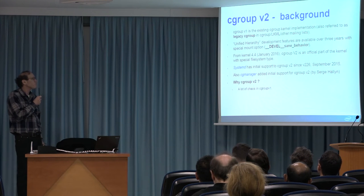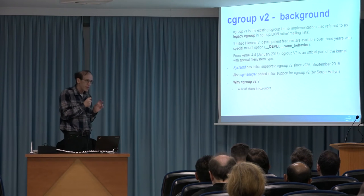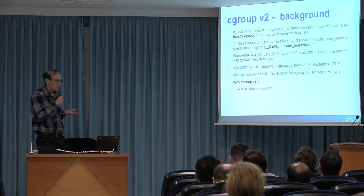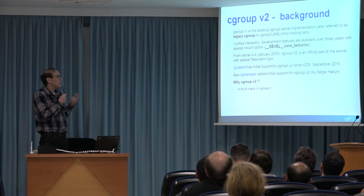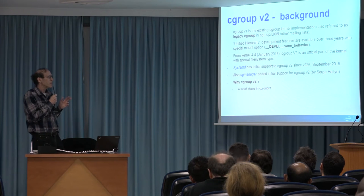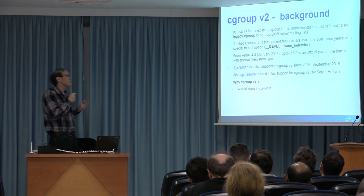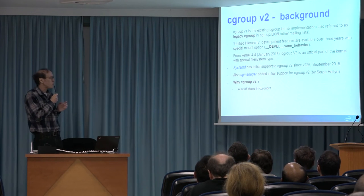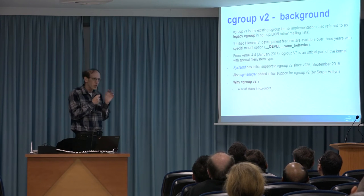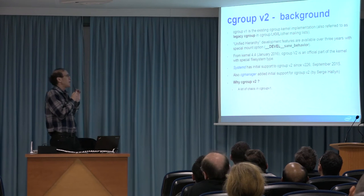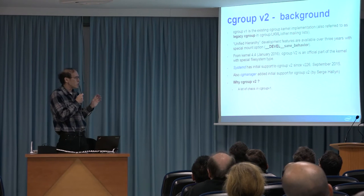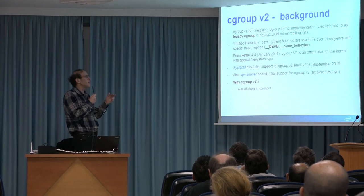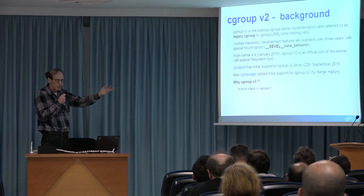Cgroup V2. First, a bit of background. Cgroup V2 in various forms has been available in the kernel for over three years. You could use it by specifying a special mount option called __DEVEL__sane_behavior — maybe this implies that the other implementation, the default, is insane. Starting from about three weeks ago in kernel 4.4, this mount option was removed and Cgroup V2 is officially part of the kernel. System D and cgroupv2 manager have already added partial support for Cgroup V2.